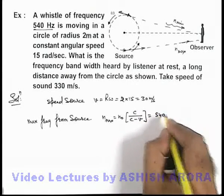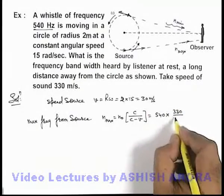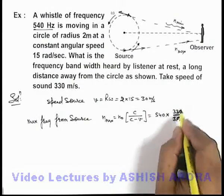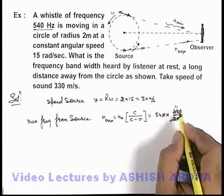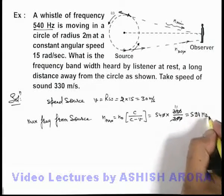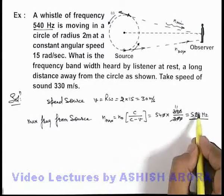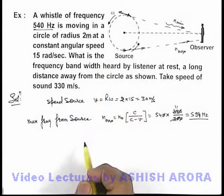This gives 540 × (330/(330-30)) = 540 × (330/300) = 54 × 11 = 594 Hz. That is the maximum frequency which is received by the observer from the revolving source.